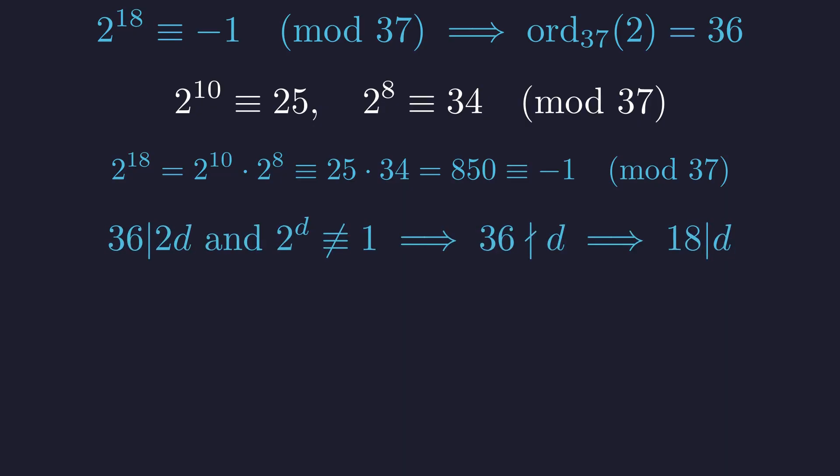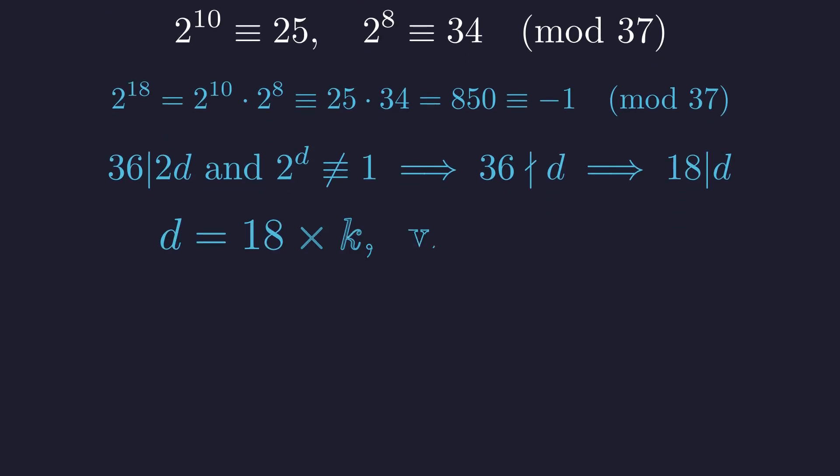Since the order of 2 modulo 37 is 36, we have 36 divides 2d. But if 36 divided d, then 2^d would equal 1, not −1. Therefore, 18 divides d but 36 does not. This means d must be an odd multiple of 18.